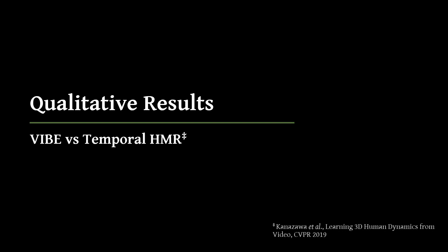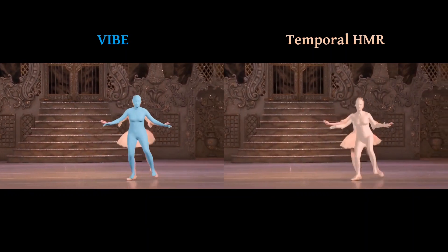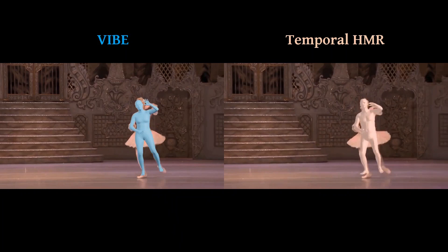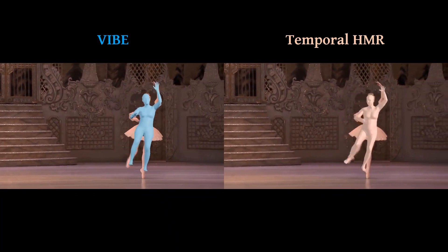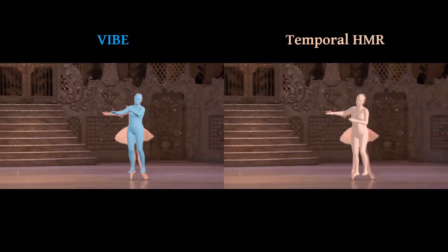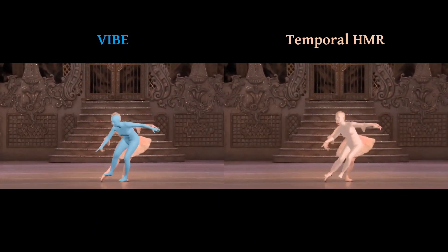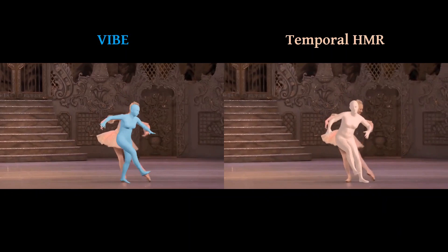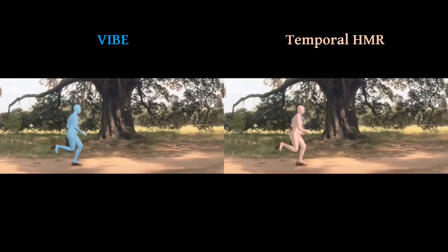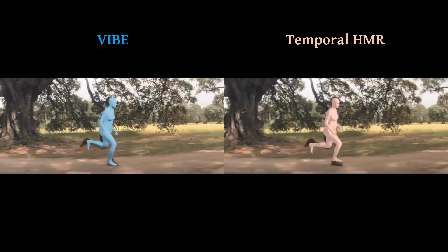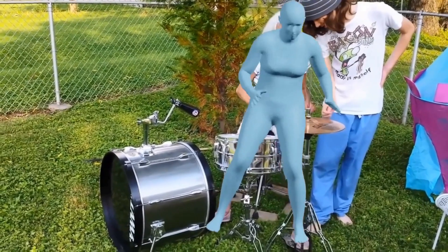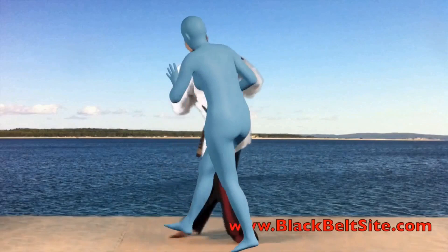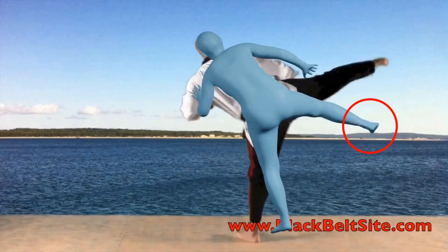We qualitatively compare VIBE with TemporalHMR, which represents the recent state-of-the-art in video-based human pose estimation. Compared to TemporalHMR, VIBE captures pose and shape more accurately. TemporalHMR usually over-smooths the pose predictions while sacrificing accuracy. On the other hand, VIBE predictions align significantly better with the human body. VIBE fails in the cases of heavy occlusion, fast motion, and multi-person occlusion.